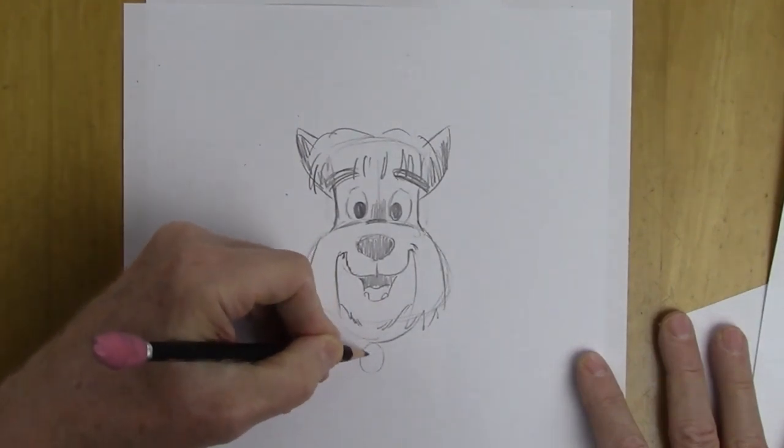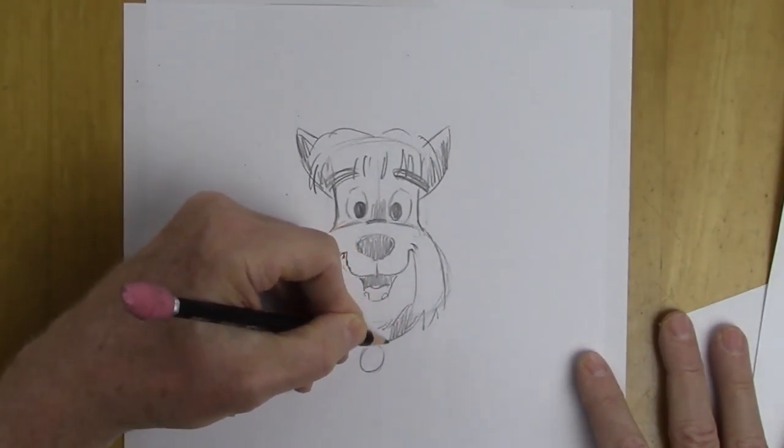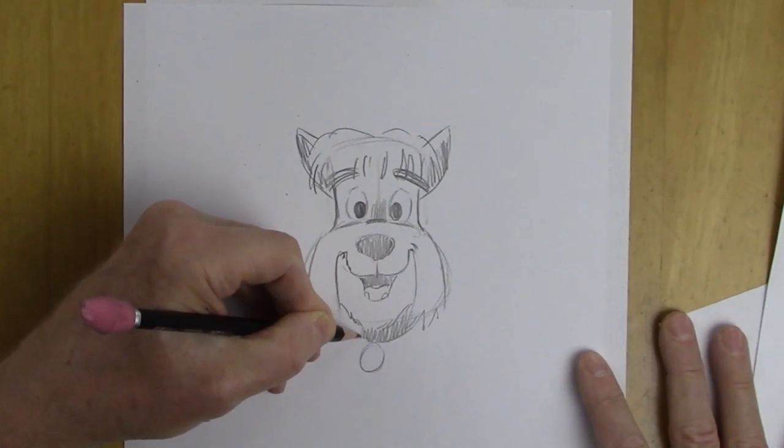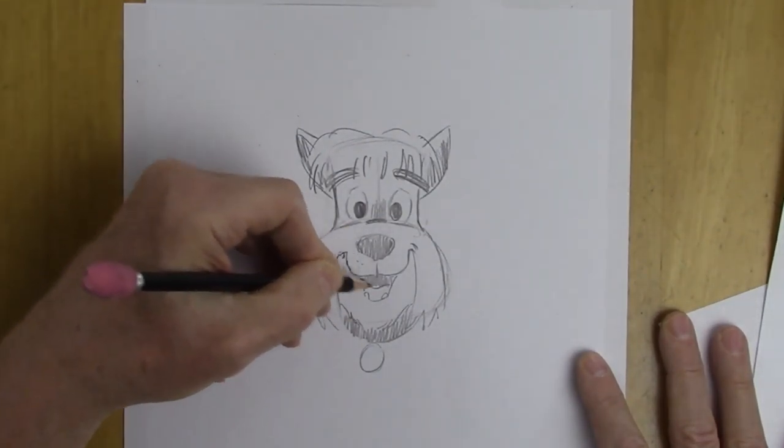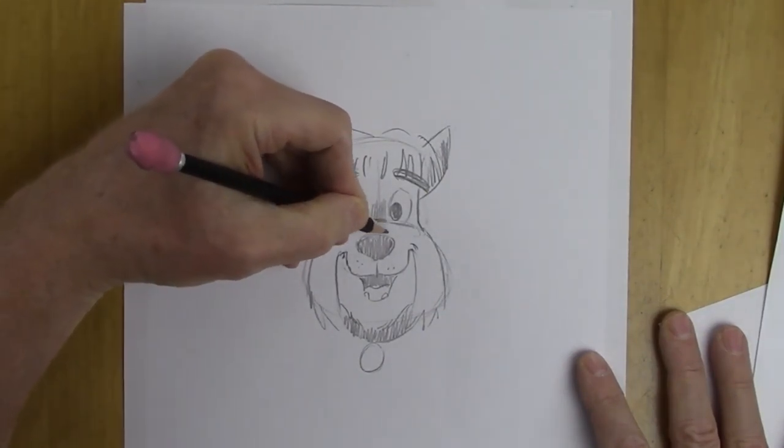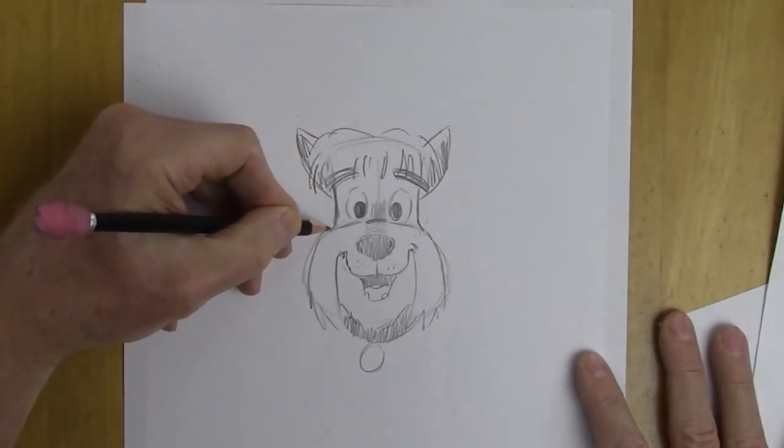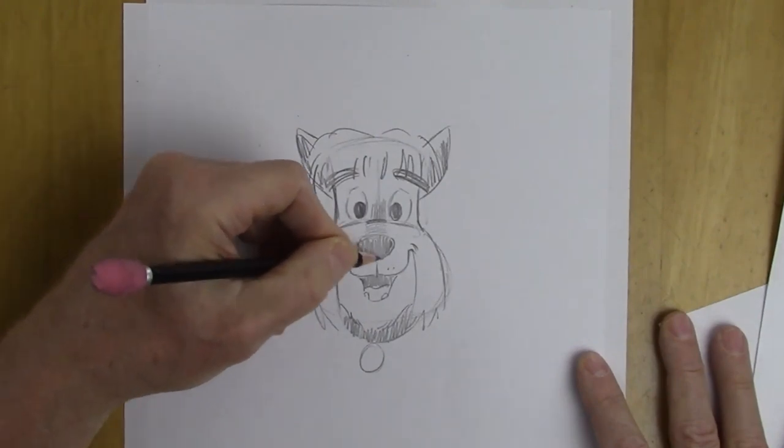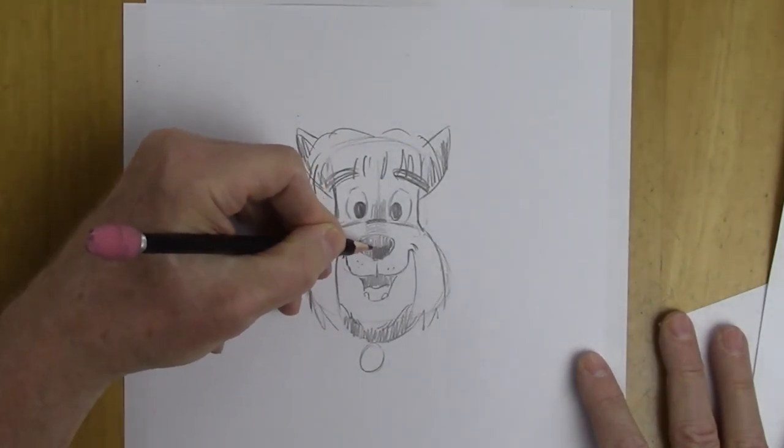And how about a collar? Just below the chin. And a medallion. A little bit of whiskers. And a little bit of shading to show the bridge of the nose. And I'm going to darken that in the bottom a little bit. And there you go.